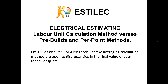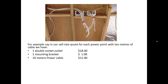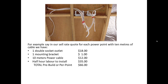Pre-bills and per point methods use the averaging calculation method and are open to discrepancies in the final value of your tender or quote. For example, in our sell rate quote of each power point with 10 metres of cable, we have: 1 double socket outlet at $18, 1 mounting bracket at $1, 10 metres of power cable at $1.20 a metre totalling $12, and half an hour of labour to install at $35. So our total pre-bill or per point is $66 per point.